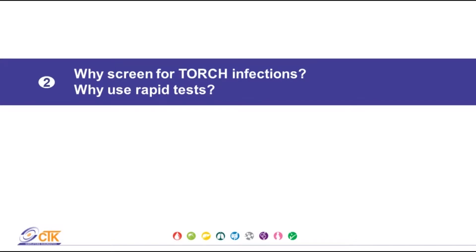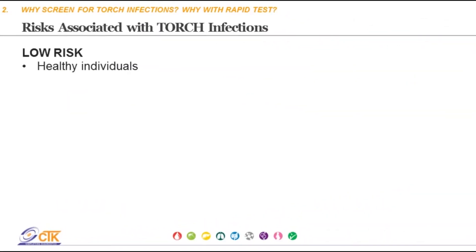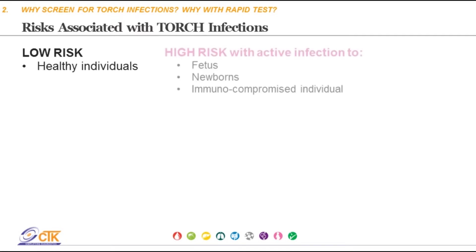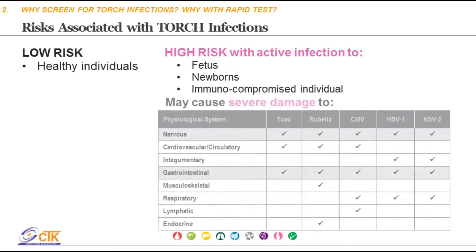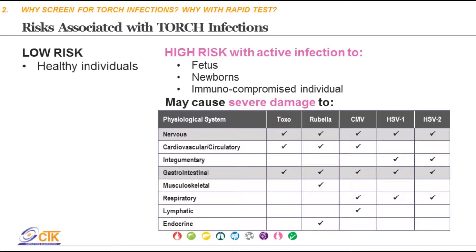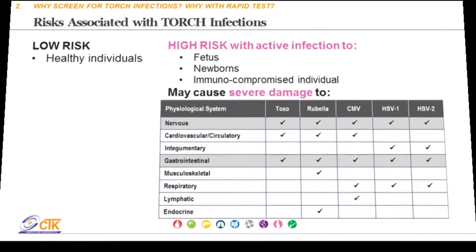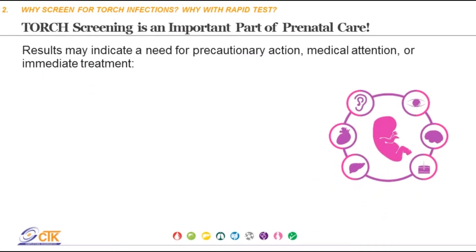Next, we'll discuss why it's important to screen for TORCH infections and the role rapid tests play in screening. For healthy individuals, TORCH infections pose low risk. However, they can pose a high risk for a fetus, newborn baby, or those who are immunocompromised. This high-risk category can face severe physiological damage to vital organs, as highlighted in the table here, which reinforces the importance of TORCH screening.